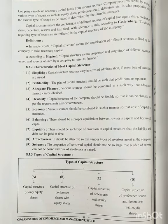Seventh is liquidity — there should be a provision in the capital structure so that liabilities and debts can be paid on time. Eighth is attractiveness — the capital structure should be attractive so that various types of investors invest in the company. Our company's policies should be attractive so that more investors purchase our shares and investment increases.